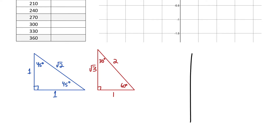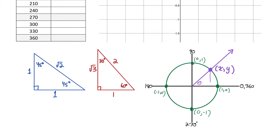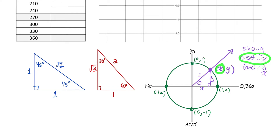The unit circle is a circle with a radius of 1 centered at the origin. Because it has a radius of 1, I can label 4 points. If a terminal arm rotates around the unit circle and intersects it at some x-y point, I can rewrite that point as cosine and sine ratios for the angle of rotation. Drawing a right triangle down to the x-axis, I label the sides x, y, and hypotenuse 1. Using SOH CAH TOA: sine of theta equals y over 1, so sine theta equals y; cosine theta equals x over 1, so cosine theta equals x; and tan theta equals y over x.